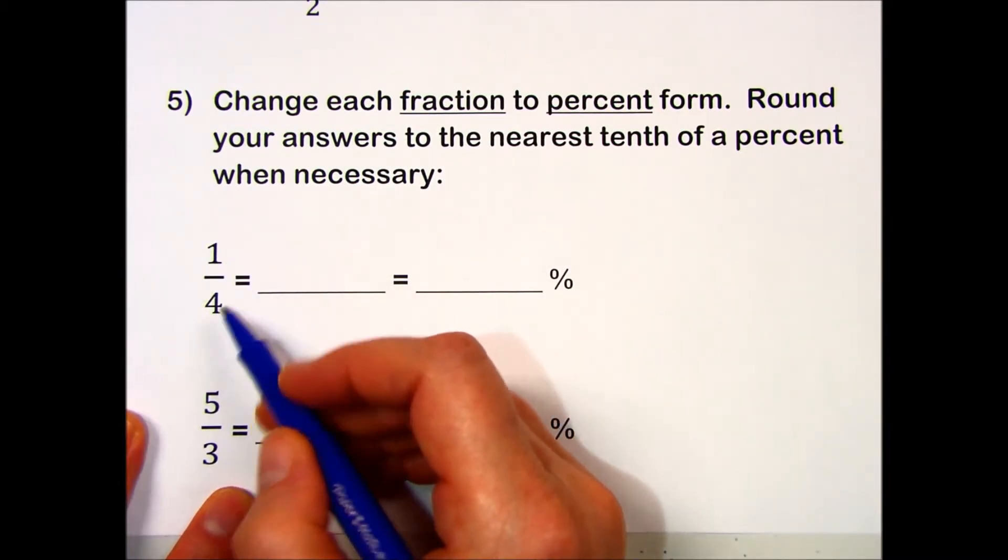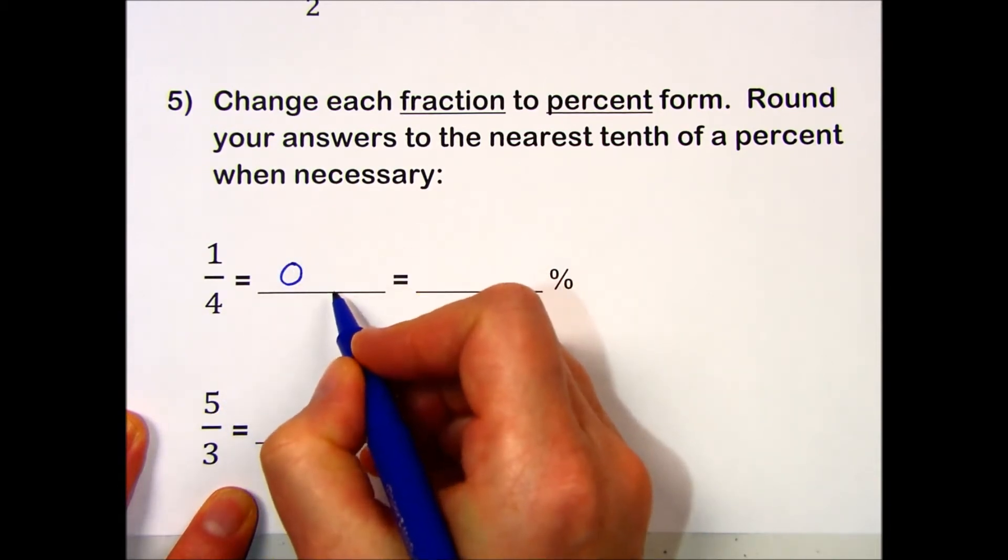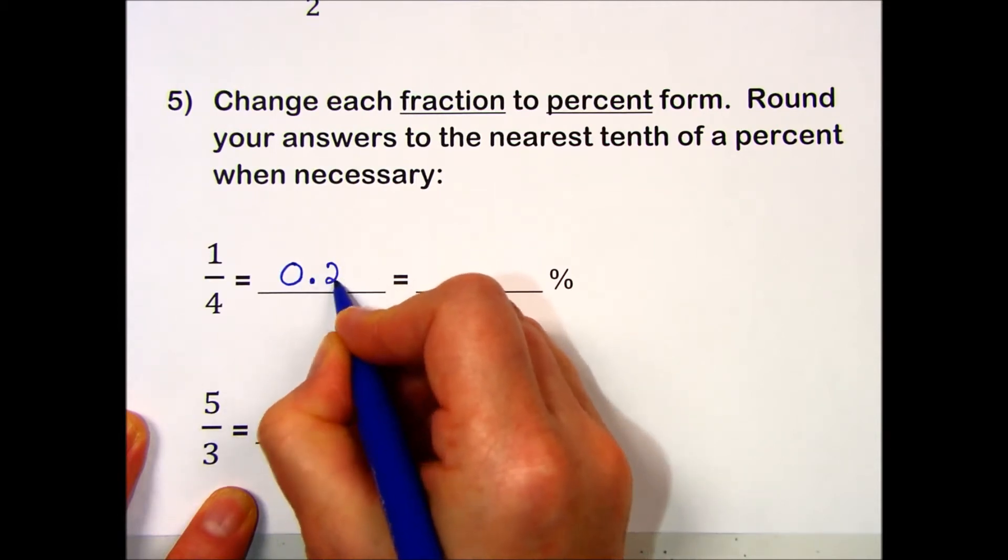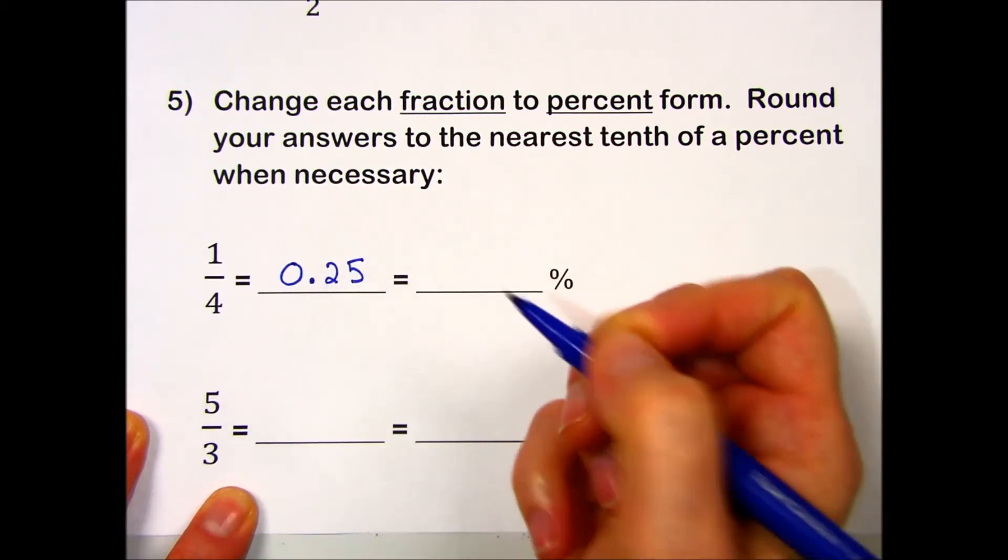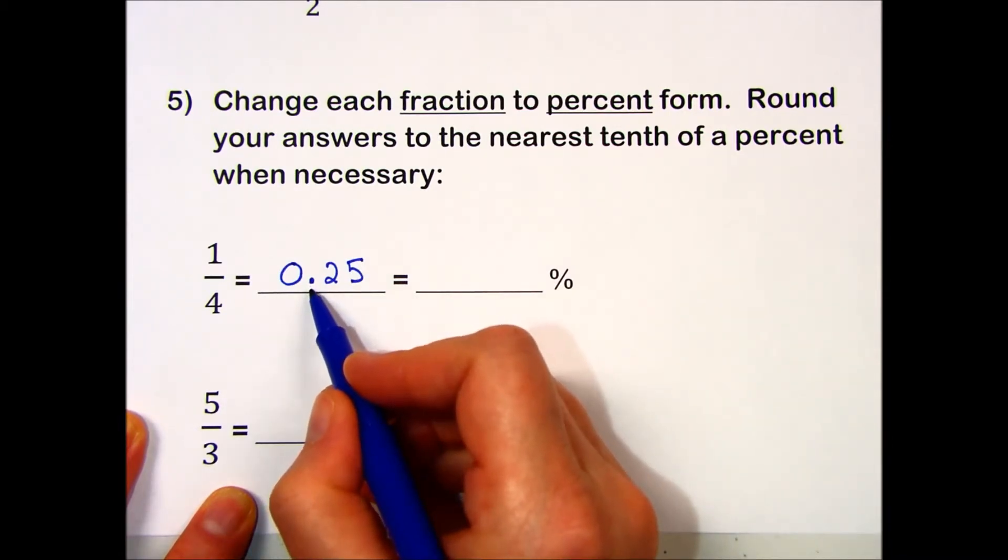In this case I get 0.25. To go to percent form, I pick up my decimal and move it two places to the right, and I have 25%.